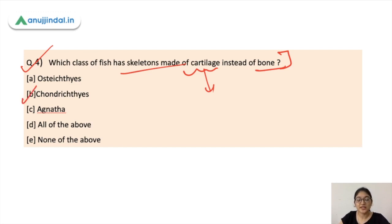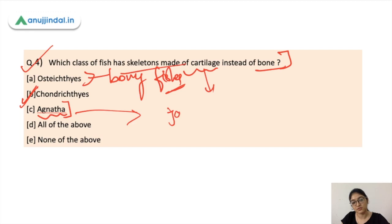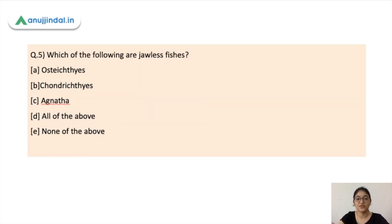Another class of fish is Agnatha — these are jawless fish. The next question follows directly: which of the following are jawless fishes? Agnatha is the correct answer here. These are oily freshwater fishes.